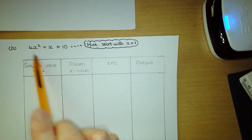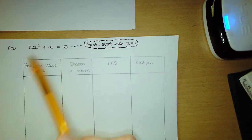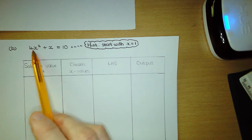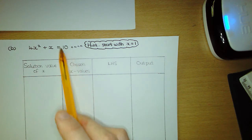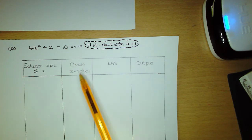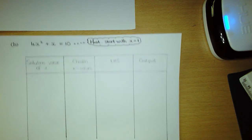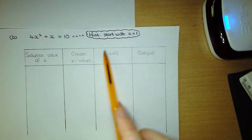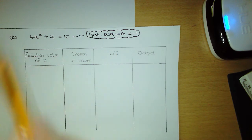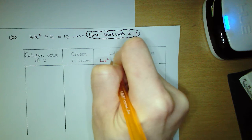Example B: we want to solve the equation 4x squared plus x equals 10 using the method of trial and improvement. We're trying to get the solution value of x that gives us the target number of 10, and we have to round our answer to one decimal place. Start by drawing your trial improvement table with the column headings. Remember, the left hand side of the equation is 4x squared plus x.